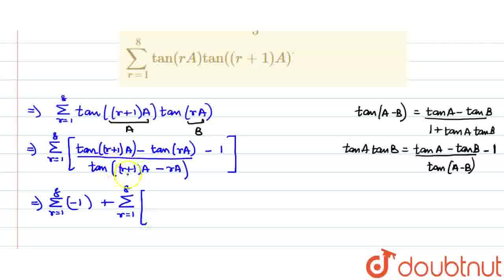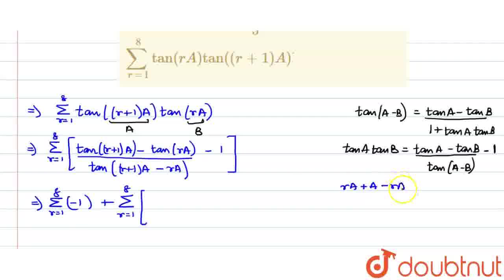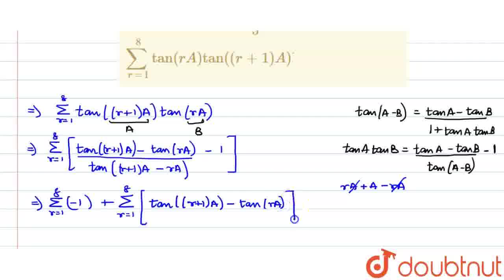When I expand the bracket, this will become ra plus a minus ra. So ra and ra will get cancelled out, and only a will be left. From the above part we can say this will become tan((r+1)a) minus tan(ra), divided by tan(a), because the ra terms get cancelled out.